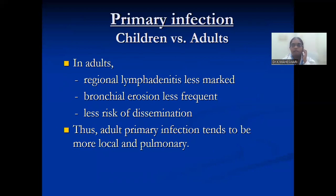Comparing primary infection in children versus adults: in adults, regional lymphadenitis is less marked, bronchial erosion is less common, and there is less risk of dissemination — so adult primary infection tends to be more local and pulmonary. But in children, disseminated infections are common.